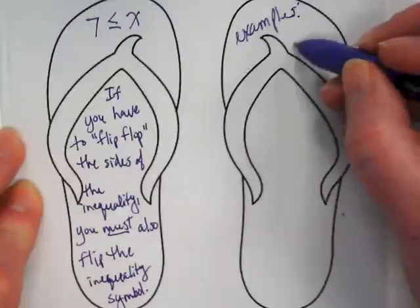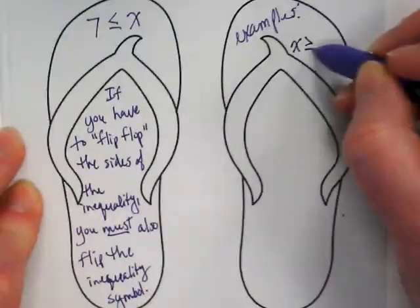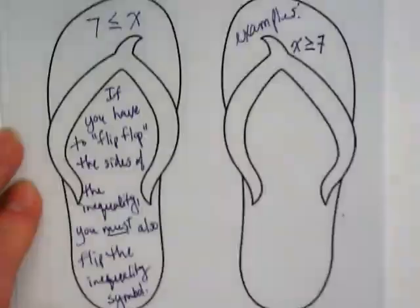So with our first example, we would take X and flip the symbol and move the number to the right.